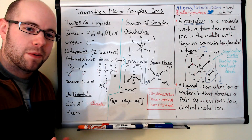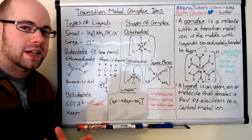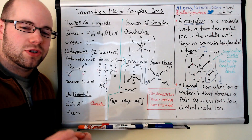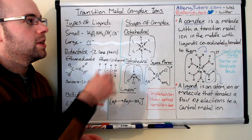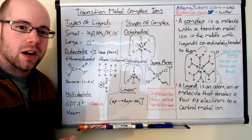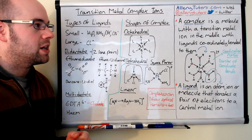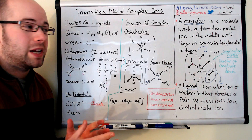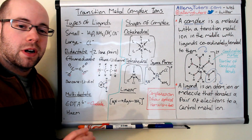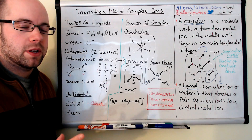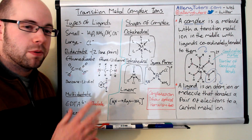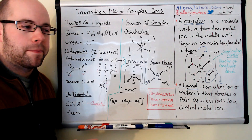So we're going to start by looking at what a complex is. A complex is just a molecule with a transition metal ion in the middle of it, and there are ligands that are coordinately or dative covalently bonding to the metal ion in the middle. A complex is quite a large molecule that can come in different shapes and sizes.